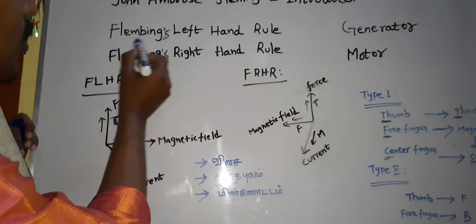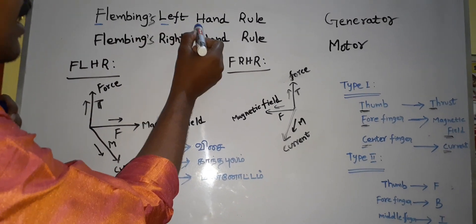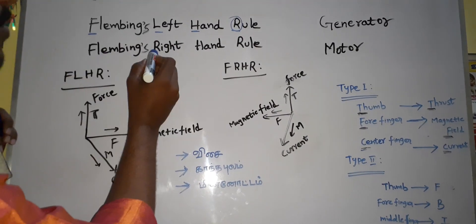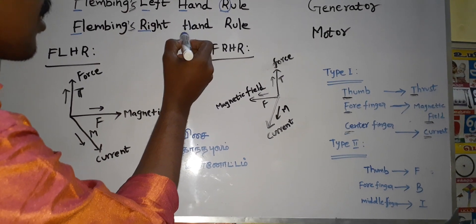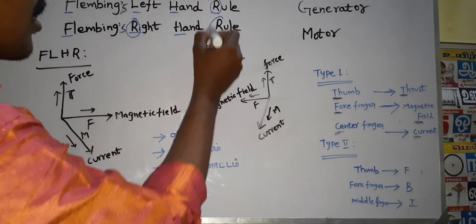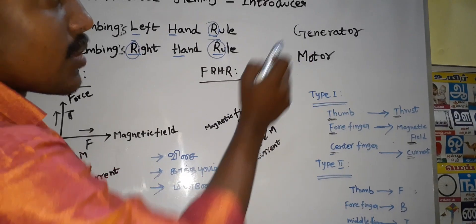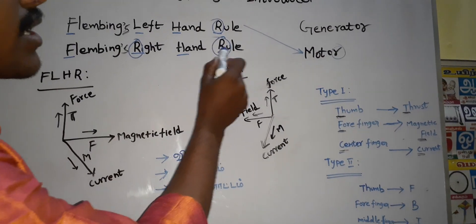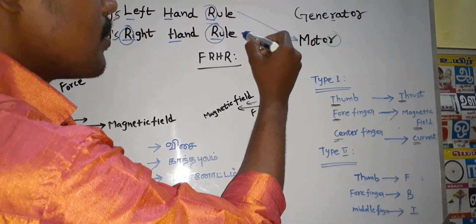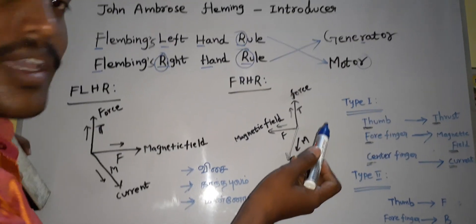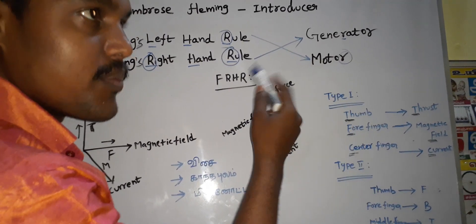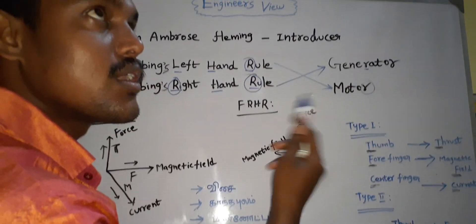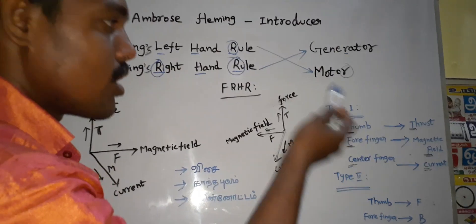In the Fleming's left-hand rule, the first term is F-A-H-R — that has one R. In the Fleming's right-hand rule, it is F-H-H-R — that is double R. So the shortcut is: 1R is for the left-hand rule, which is for the motor; 2R is for the right-hand rule, which is for the generator.